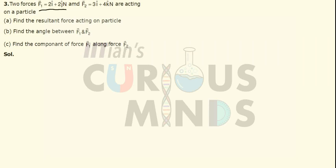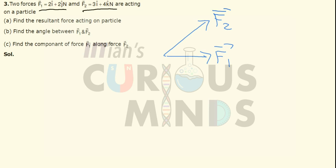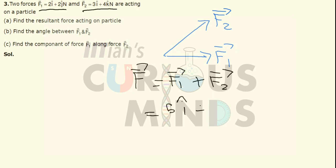Force F1 is equal to 2î + 2ĵ newton and F2 is equal to 3î + 4k̂ newton are acting on a particle. We have to find the resultant force, the angle between them, and the component of F1 along F2. The resultant force is F1 + F2, which gives us 5î + 2ĵ + 4k̂ newton.